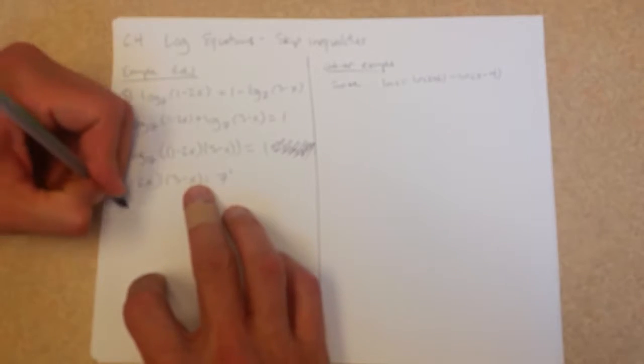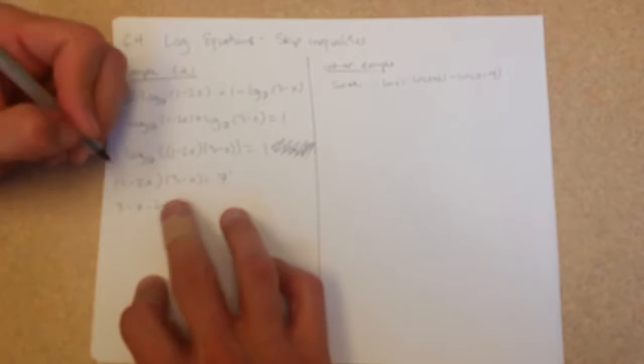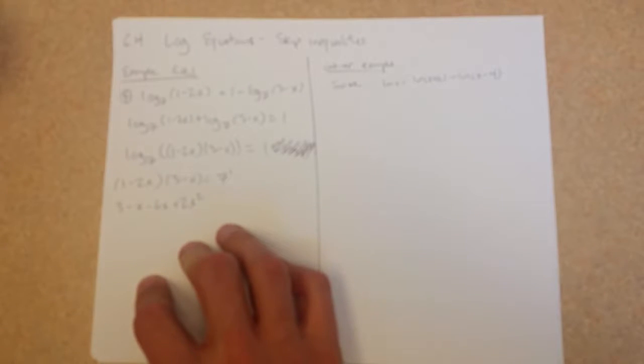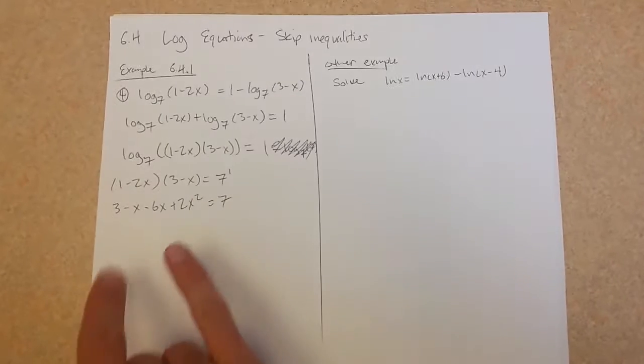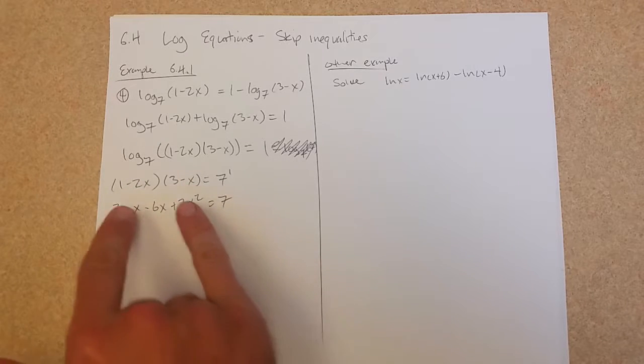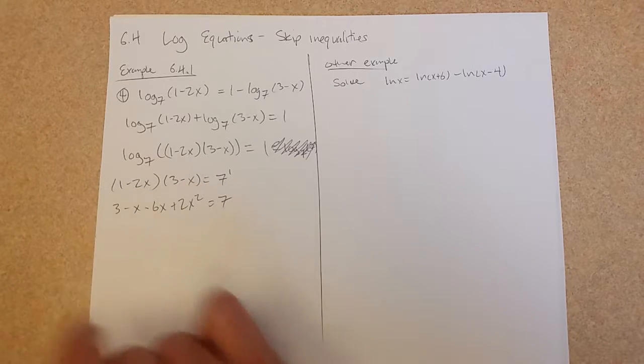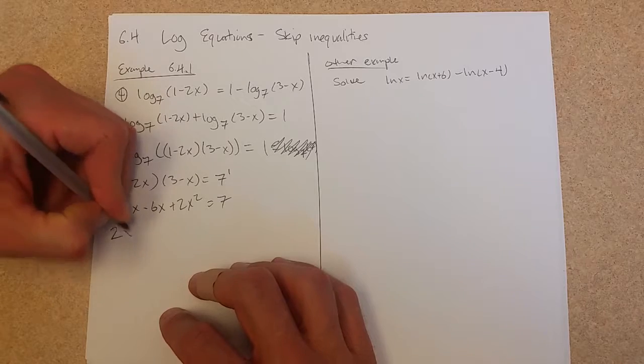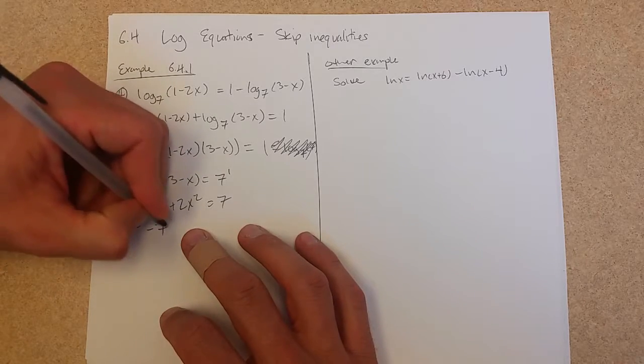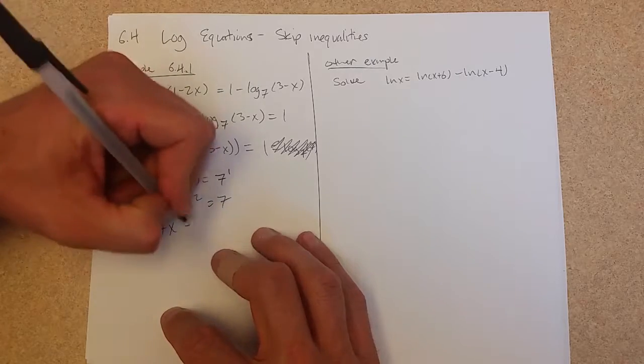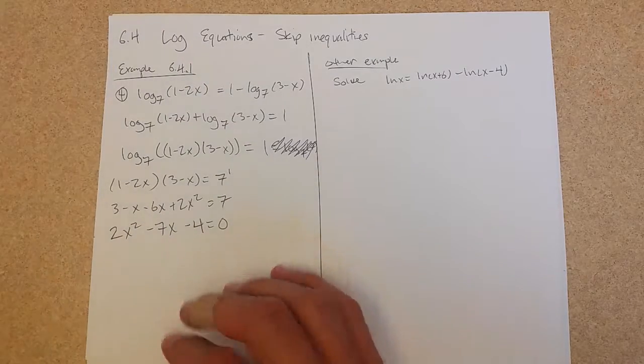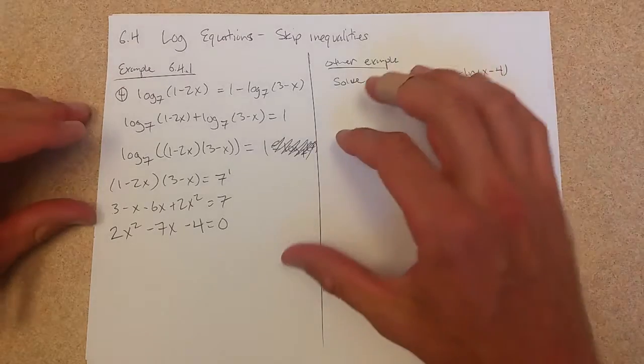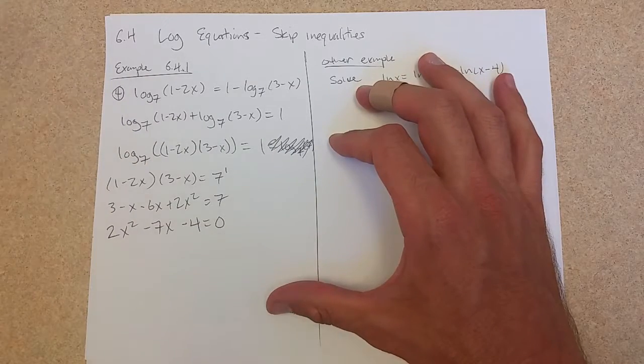Now I'm going to FOIL this out. 3 minus x minus 6x plus 2x squared equals 7. We're going to subtract 7. I'm going to write this in order. 2x squared minus 7x, 3 minus 7 is minus 4 equals 0. Oh boy.